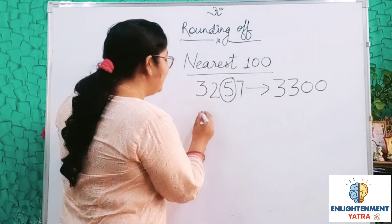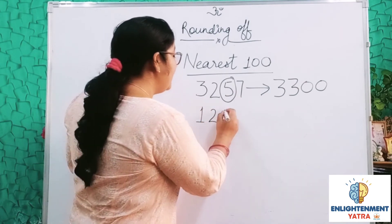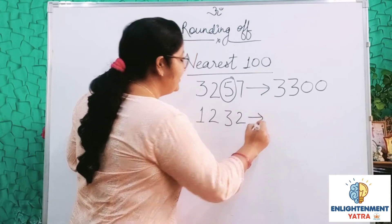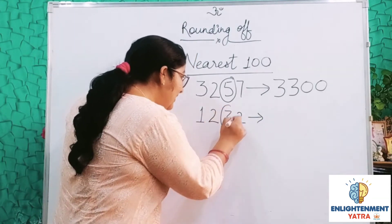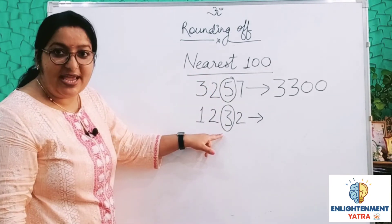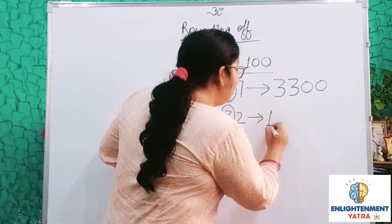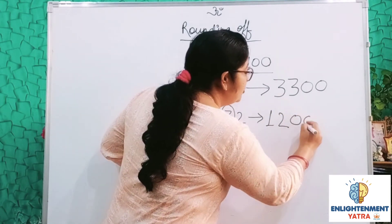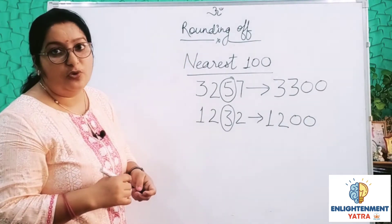We will see one more example. For example, 1232. In this case, we will see our tens digit. The tens digit is 3, which is less than 5. So no change will happen to the hundreds place — it will remain as 1200. The last two digits will be 0, 0. So this is our nearest 100 round off.